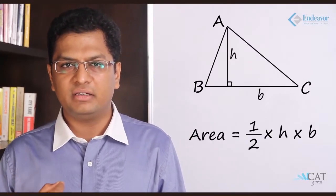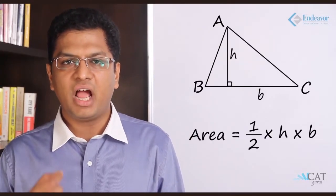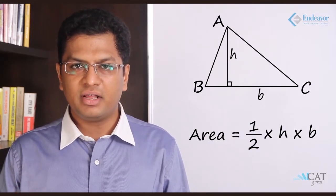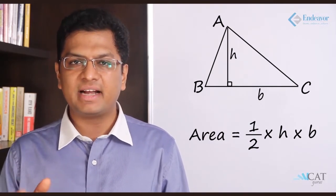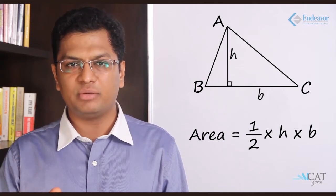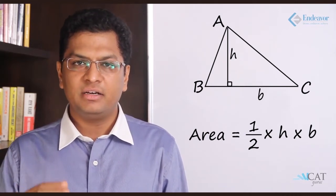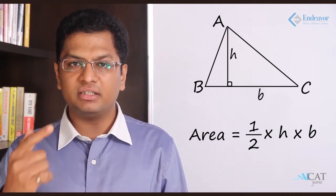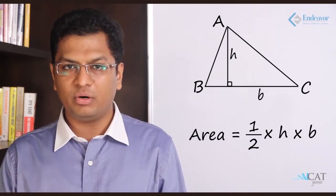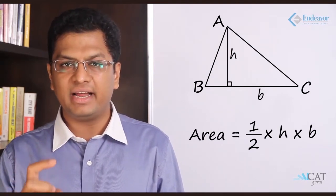What is the area of a triangle? The area of a triangle is nothing but half into the height into the base. Now every side can act as a base. Let us say the one which is on the bottom is the base. The perpendicular distance between the other third vertex and that side is called the height. So half into the height into the base is the area of a triangle.